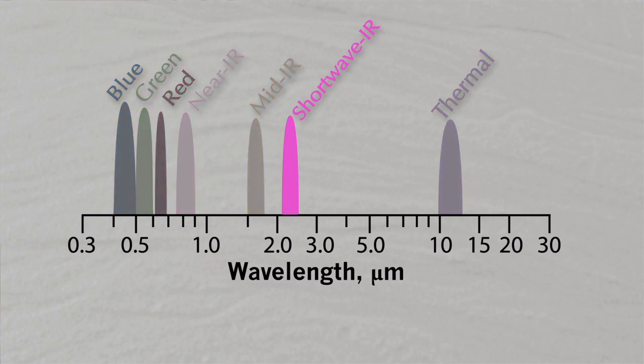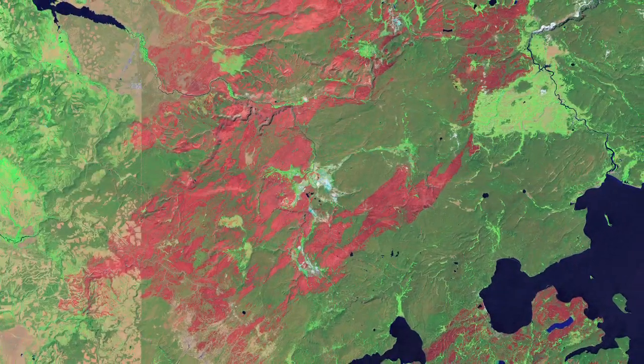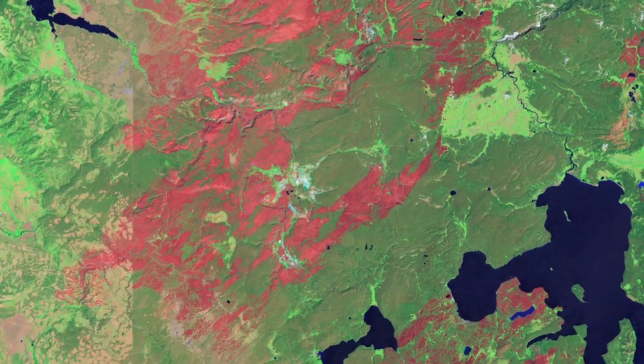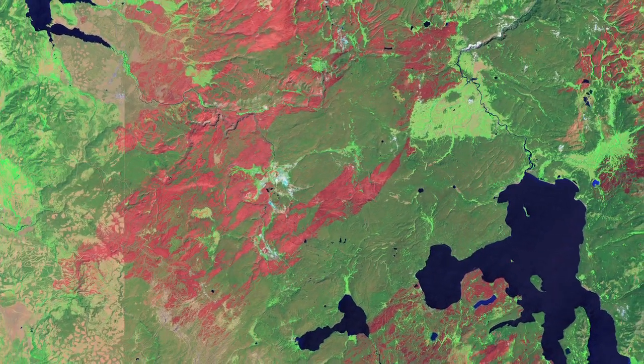So in this case, for example, we've assigned the short-wave infrared band to red, the near-infrared band to green, and the green band to blue. And that creates what we call a false-color image. It's not exactly what your eye would see, but in this case it's quite convenient because the healthy vegetation shows up as green, and so we can sort of automatically interpret that.